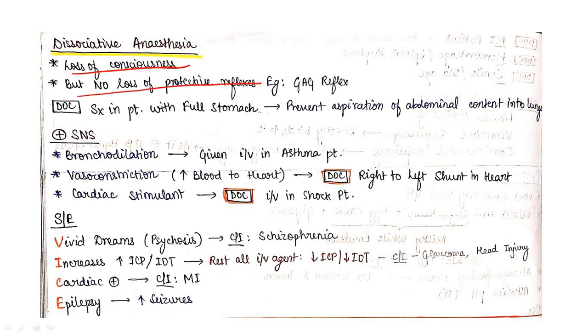In dissociative anesthesia there is loss of consciousness but no loss of protective reflexes. So drug of choice in surgery in patients with full stomach to prevent aspiration of abdominal content into lungs. This drug stimulates SNS, so bronchodilation, vasoconstriction, and cardiac stimulation occur.